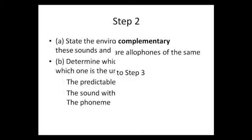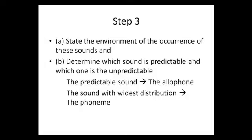If two sounds are in complementary distribution, in which situation we have phonemes and their corresponding allophones, then we need to figure out which one is a phoneme and which is an allophone. To figure out this difference, we need to state: a) the environment of the occurrence of the sounds and b) which one is predictable and which one is unpredictable. The predictable sound is the allophone, and the sound with the widest distribution is the underlying variant used elsewhere, that is to say, the sound that we consider as the phoneme.